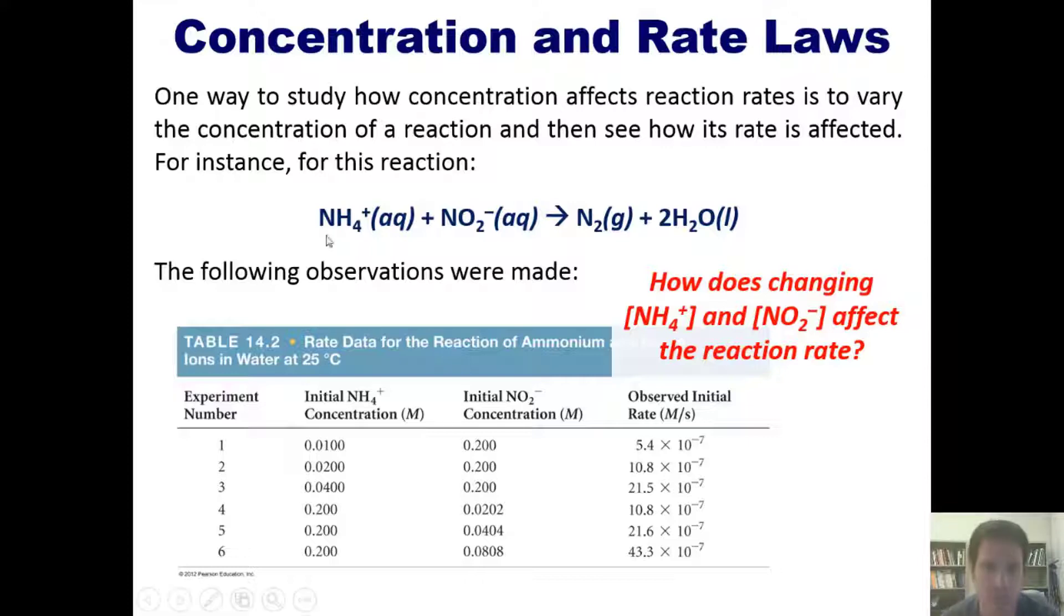Now let's take a look at varying the concentration of nitrogen dioxide. You'll notice that if I double the concentration of nitrogen dioxide from 0.0202 to 0.0404, what happens to the reaction rate? Yeah, it looks like it about doubles. What if I double that concentration again? Once again, it looks like it also about doubles. So just as with ammonium, if I vary the concentration of nitrogen dioxide in this case, there's a one-to-one proportional relationship of how that affects the rate or speed of the reaction. Hopefully that makes sense. That's basically what we get out of this table.